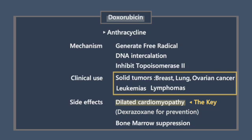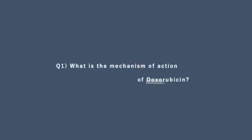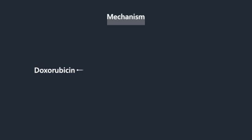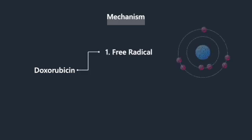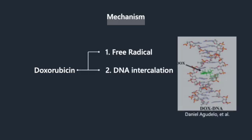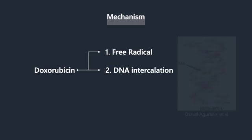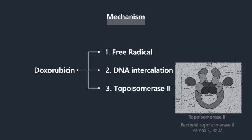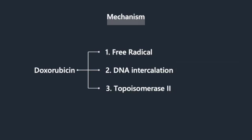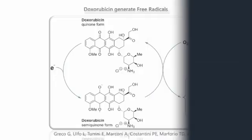What is the mechanism of action of doxorubicin? The mechanism of action of doxorubicin involves generating free radicals and intercalating in DNA. In addition, it inhibits topoisomerase-2 enzyme activity.